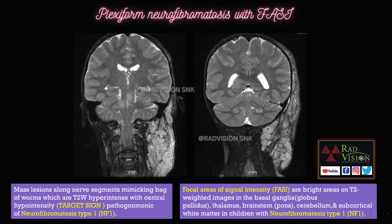In the first case, you can see there is a hyperintense lobulated mass lesion noted in the subcutaneous tissues, which is predominantly hyperintense on T2. There are also a few hyperintense areas within the T2 hyperintense areas mimicking a target appearance. Whenever you see multiple lobulated T2 hyperintense lesions mimicking a bag of worms appearance in the cutaneous and subcutaneous tissues along the nerve segments, definitely suspect plexiform neurofibromatosis, which is classically associated with NF1.